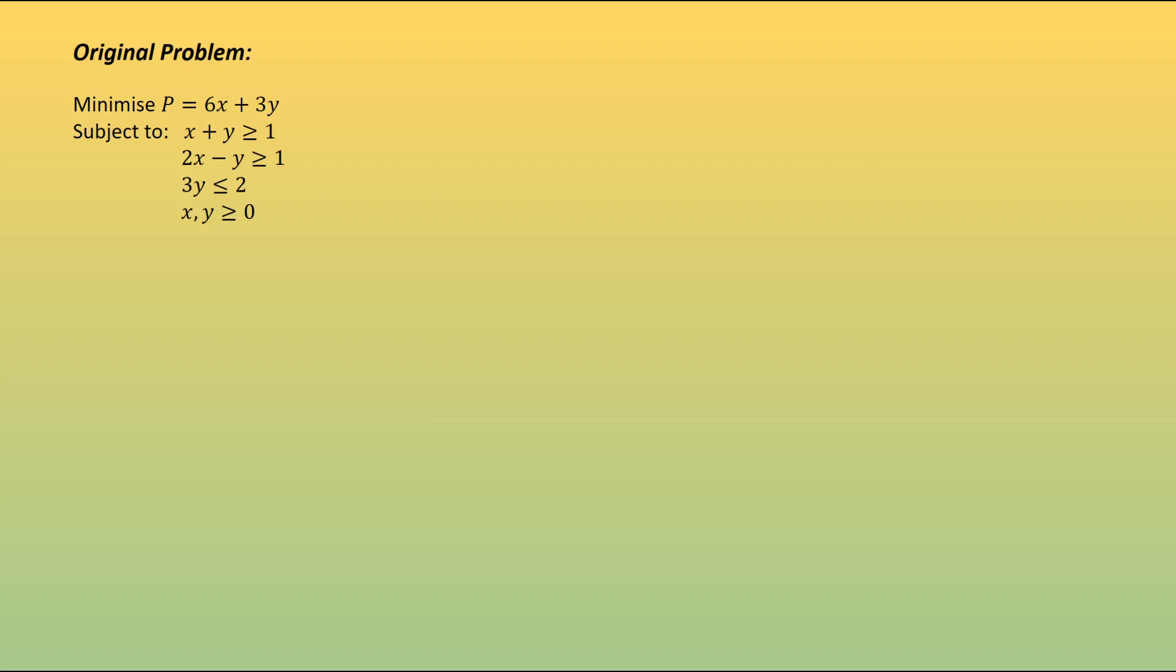First of all, this problem is a minimizing problem, so we need to set up Q as being the negative of P, which means that Q is equal to minus 6x minus 3y, and we rearrange to get Q plus 6x plus 3y is equal to 0. Next, we need to deal with our constraints. Looking at the third constraint, we have 3y is less than or equal to 2, so we can simply use a slack variable: 3y plus s3 is equal to 2.